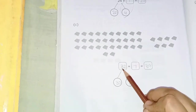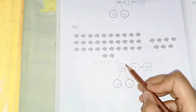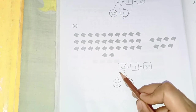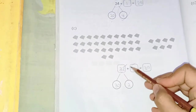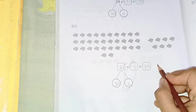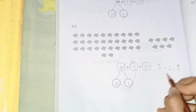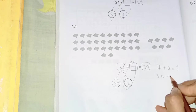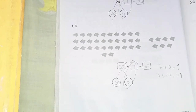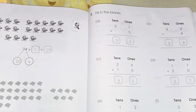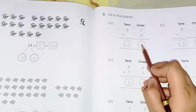Here we have 32 plus 7. We separate 32 into tens and ones: 30 and 2. Now we add the ones: 7 plus 2 equals 9, and then 30 plus 9 is 39. Now on page 189 we have simple addition.